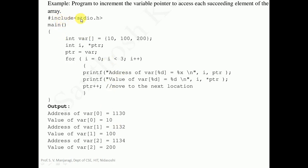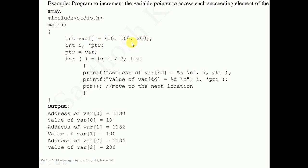In this particular program we begin with hash include stdio.h, then we have the main function. Inside the main function the very first statement is the array declaration statement. In this statement we declare and initialize an integer type array with the name var, initialized to 3 elements: 10, 100, and 200. The size of the array is not specified here because automatically it will be taken as the number of elements being initialized, which is 3. So this statement is creating an array named var with elements initialized to 10, 100, and 200.